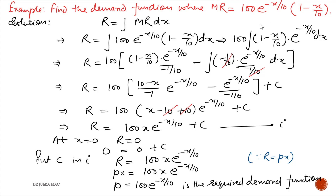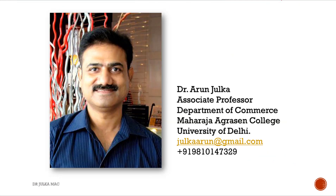In this question we use integration by parts. Here one part is algebraic and the other part is exponential. So we use: first function as it is times integration of second, minus derivative of first times integration of second, and after that integrate the resulting part.